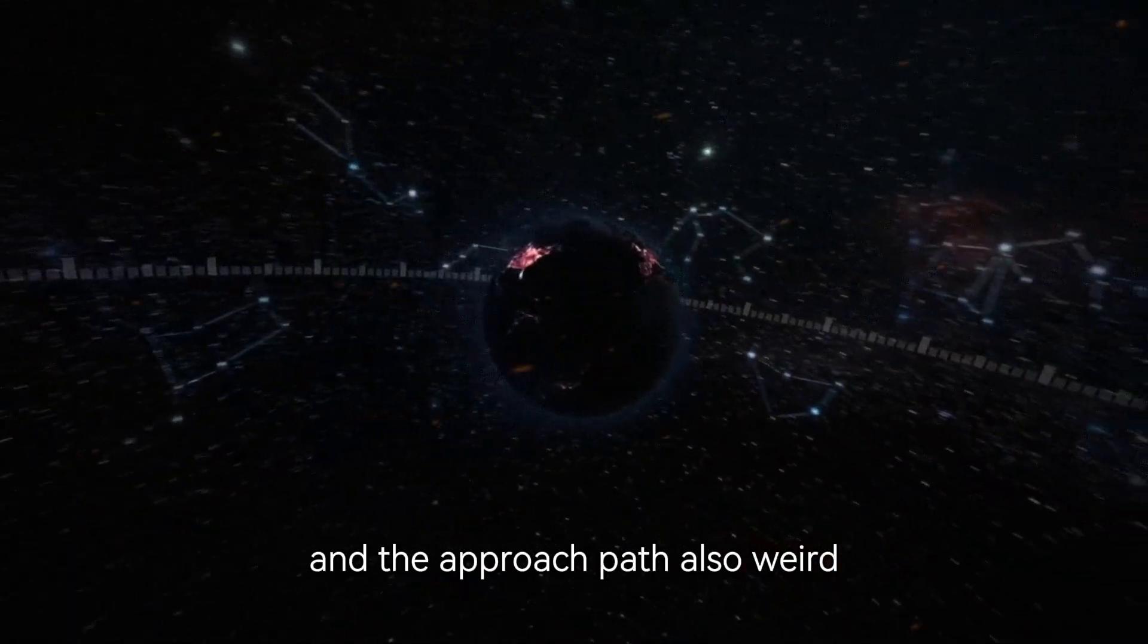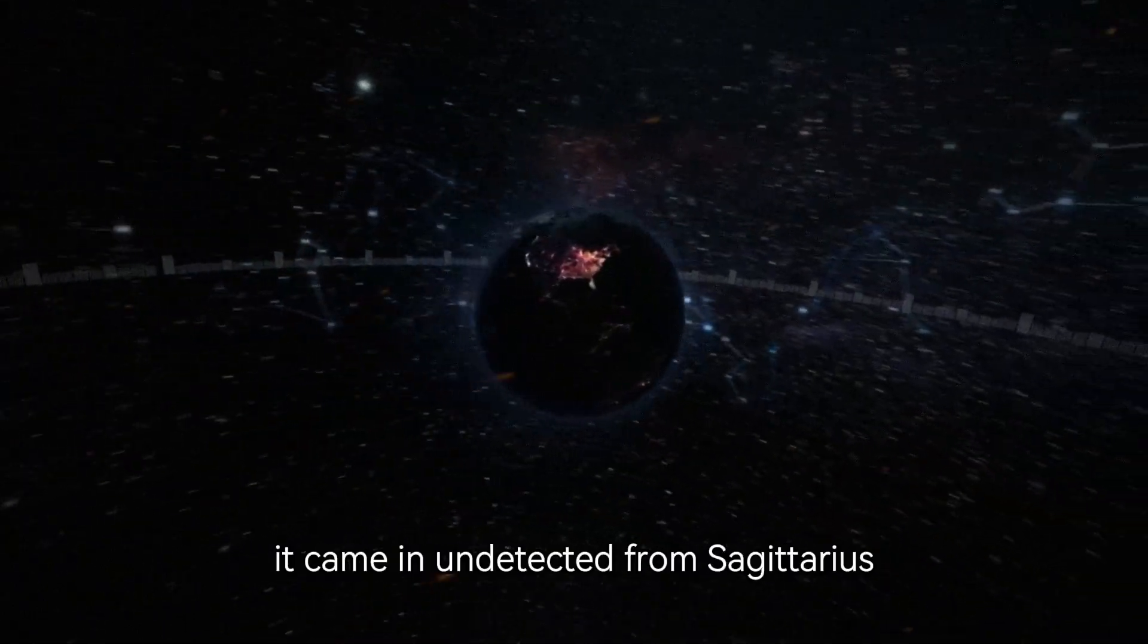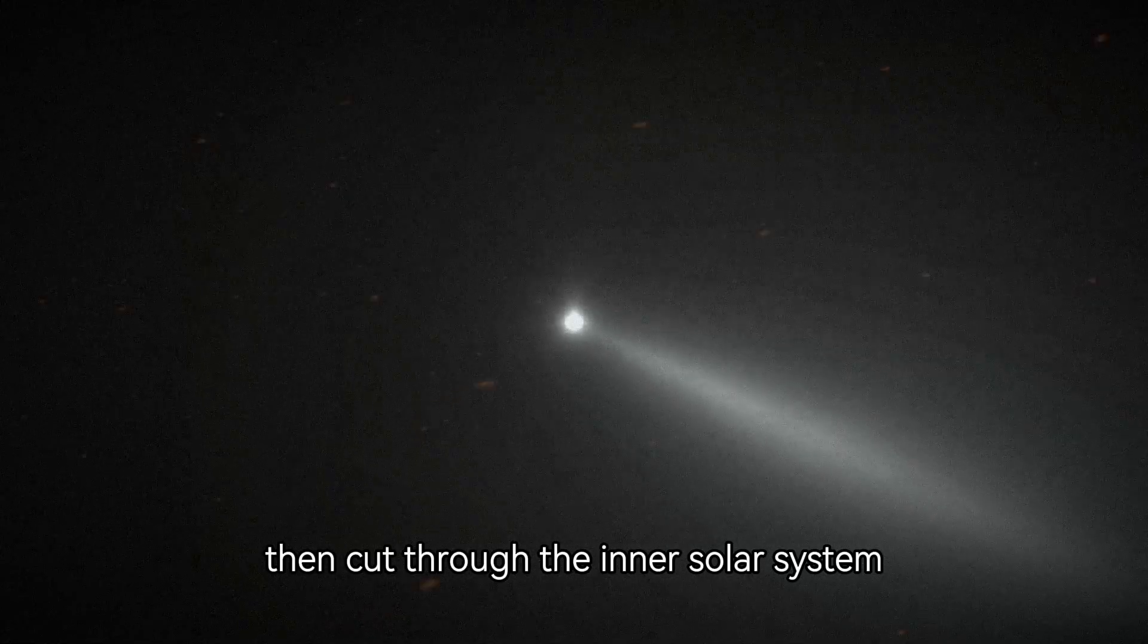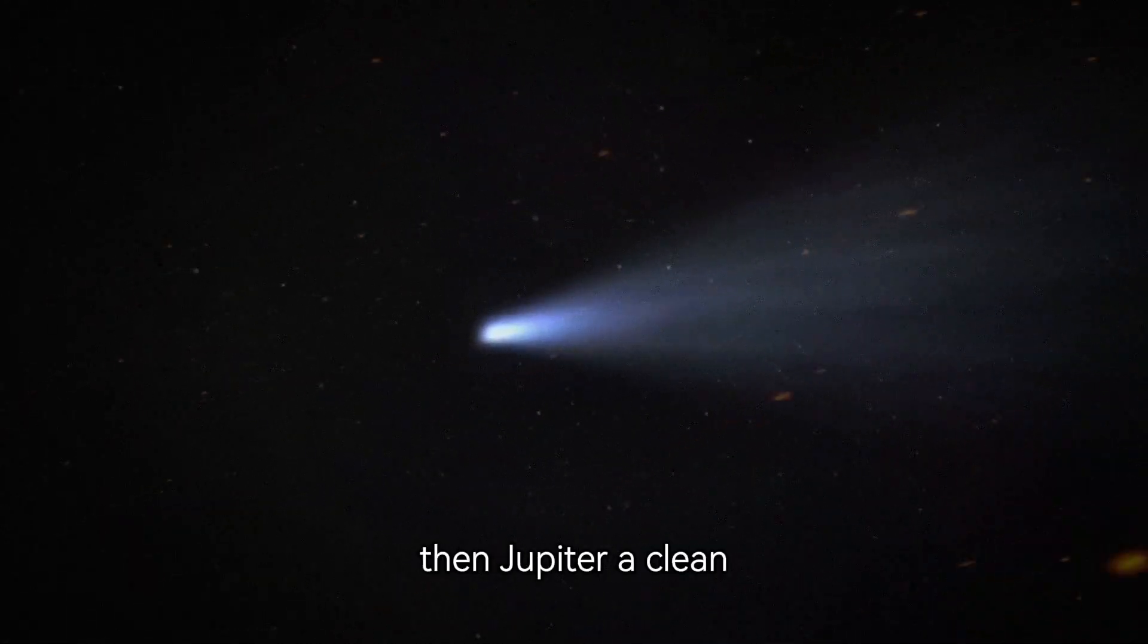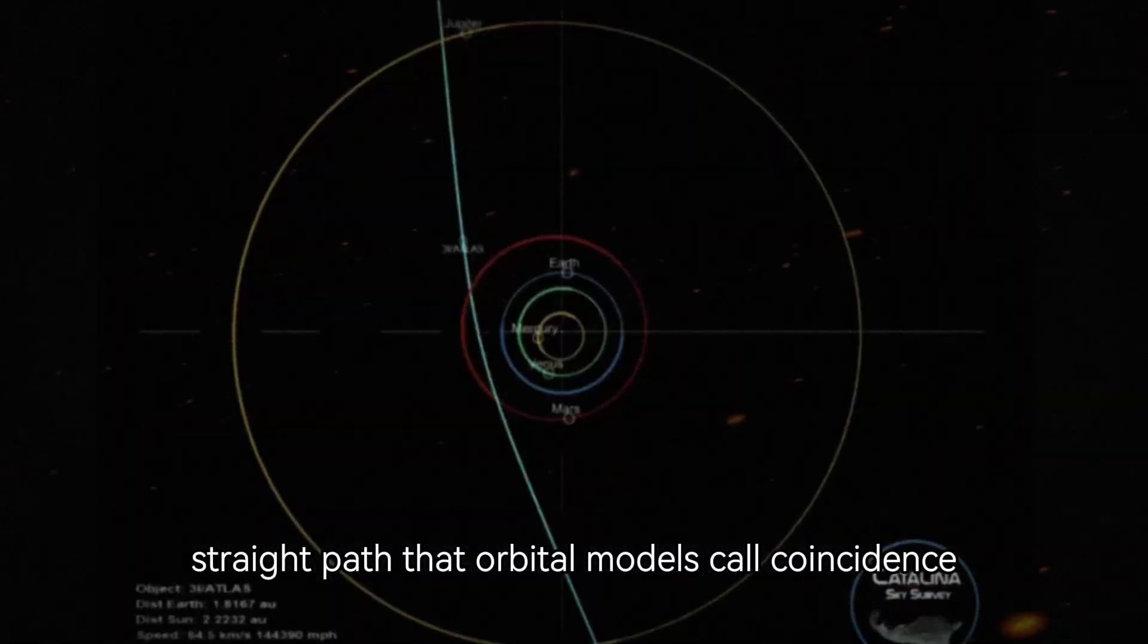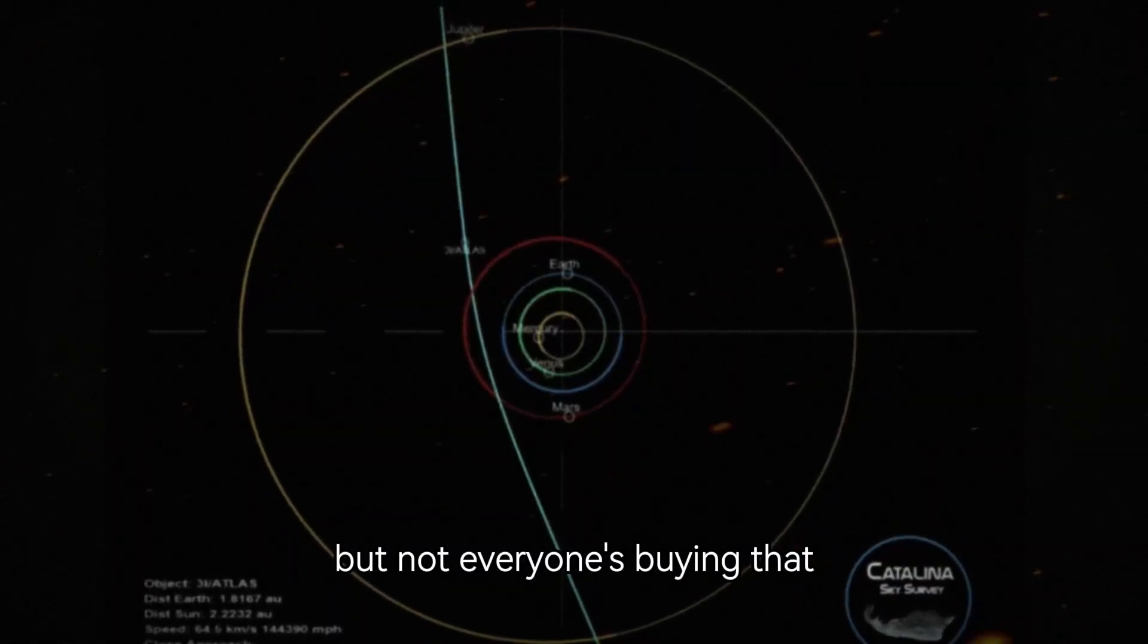And the approach path? Also weird. It came in undetected from Sagittarius, then cut through the inner solar system. Venus, then Mars, then Jupiter. A clean, straight path that orbital models call coincidence, but not everyone's buying that.